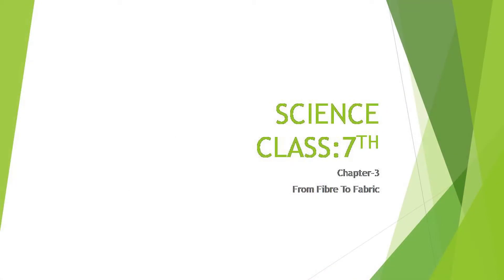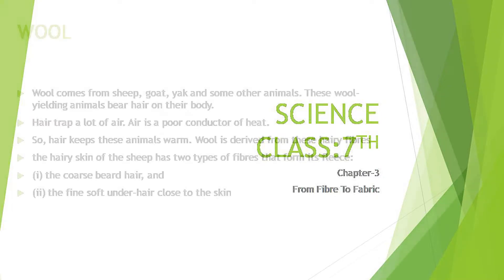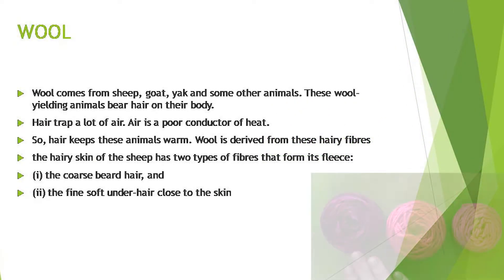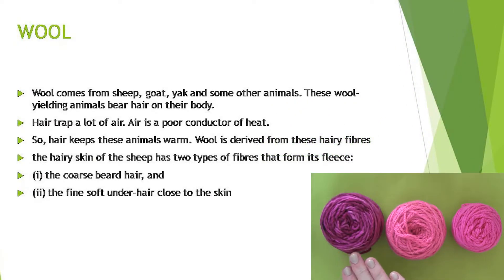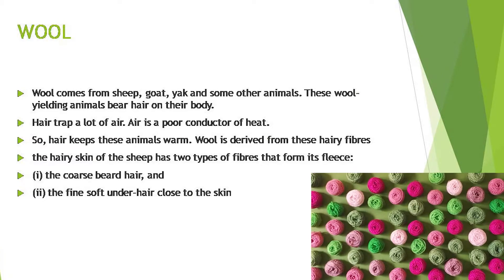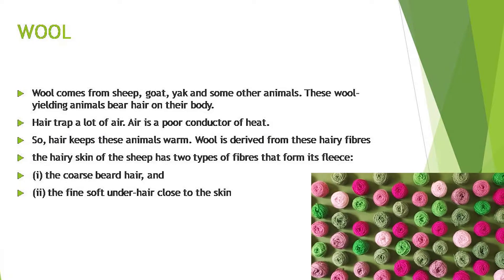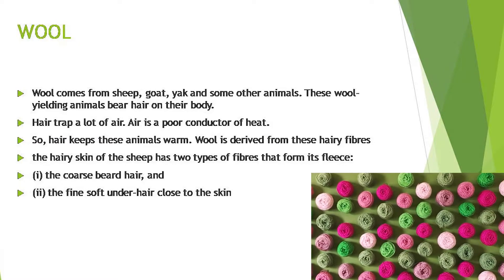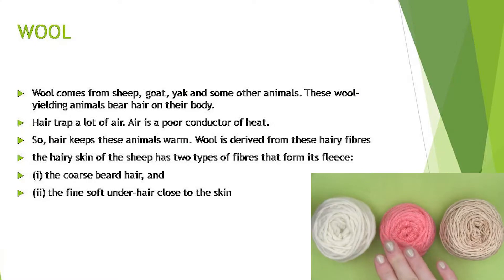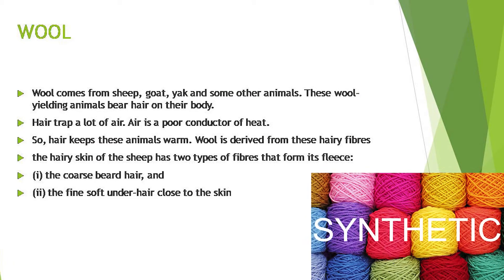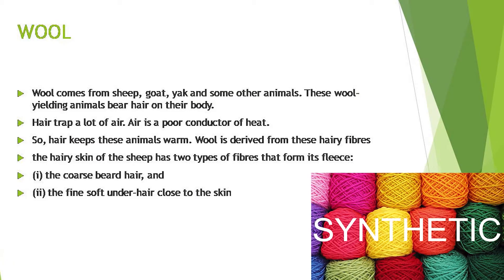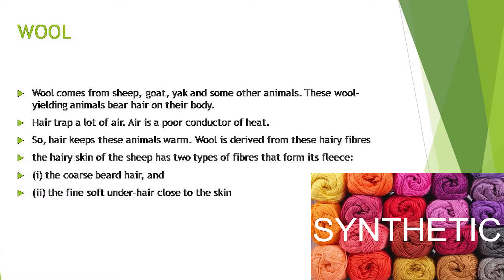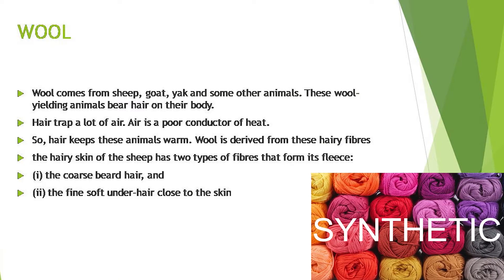The first topic of this chapter is animal fibers. The first is wool. Wool comes from sheep, goat, yak, and some other animals. These wool-yielding animals bear hair on their body. Hair traps a lot of air, and air is a poor conductor of heat, so hair keeps these animals warm. Wool is derived from these hairy fibers.